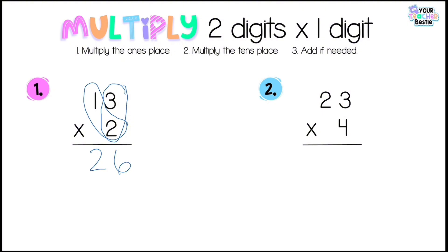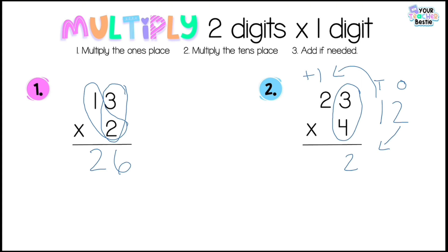Problem two: 23 times 4. Step one: multiply the ones place — 3 times 4 is 12. It's a two-digit number so I need to regroup. Labeling place values — the 2 goes to the ones place and the 1 goes up to the tens place with a plus sign. Step two: multiply the tens place — 2 times 4 is 8. Step three: add — 8 plus 1 is 9. Our product is 92.